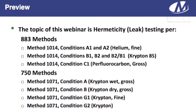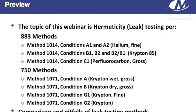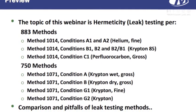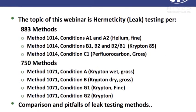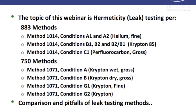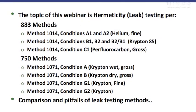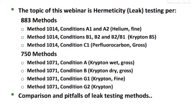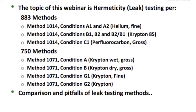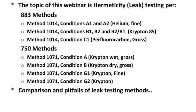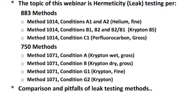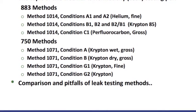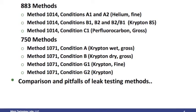The topic of the webinar today is hermeticity or leak testing per these two methods: the methods in 883 for fine leak A1, A2, conditions B1, B2, and the B2/B1 combo test in Krypton 85 and fluorocarbon gross leak. Additionally, we're going to discuss 750 condition A Krypton wet gross leak, condition B the dry gross Krypton, and Krypton fine. We'll also cover comparisons of these tests and some pitfalls when performing leak tests.